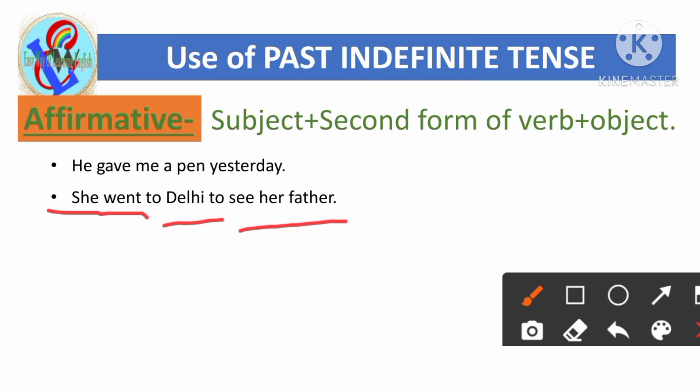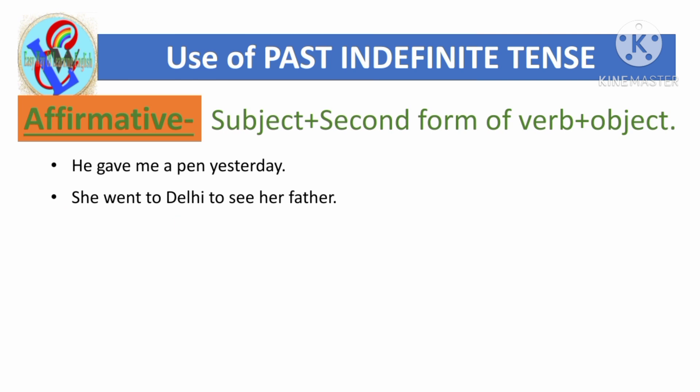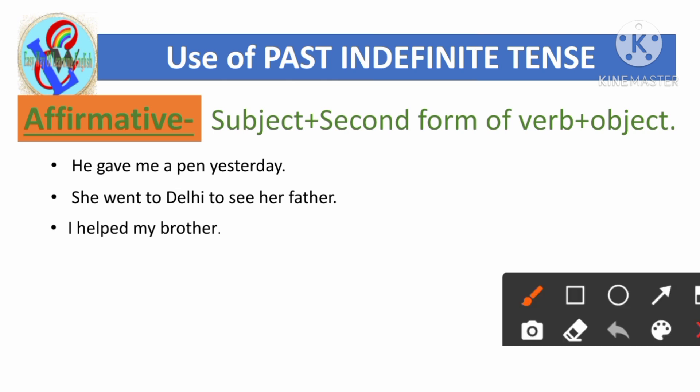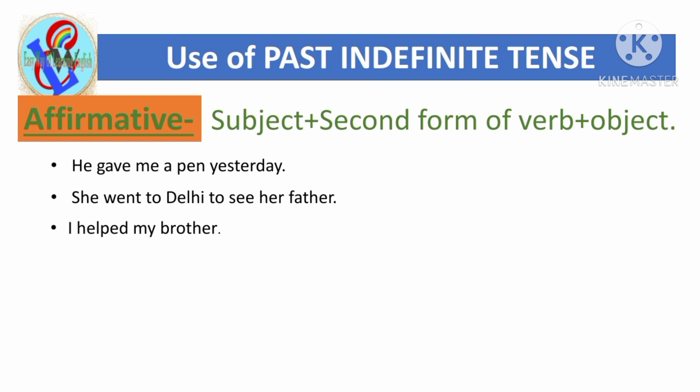'I helped my brother.' Here 'I' is the subject, 'helped' is the second form of 'help' — 'help' means to help and 'helped' means helped — and 'my brother' is the object.